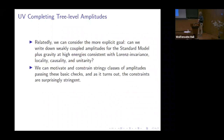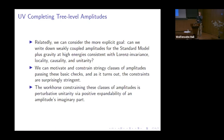We can motivate and constrain some stringy classes of amplitudes — not constructing them from string theory but motivating them, looking basically exactly like string amplitudes — but letting couplings and ranks of gauge groups vary, and then constrain them using perturbative unitarity. Those constraints are actually surprisingly stringy. The workhorse is going to be positive expandability of the amplitude's imaginary part. We manifest the other conditions just by having a stringy pre-factor — Regge behavior, exponential softness — but positive expandability will not be manifest.